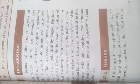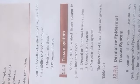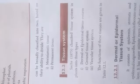Now we look at tissue. Tissue is a group of cells that are similar or dissimilar in structure and origin but perform similar functions. Plant tissues can be broadly classified into two types based on their ability to divide.